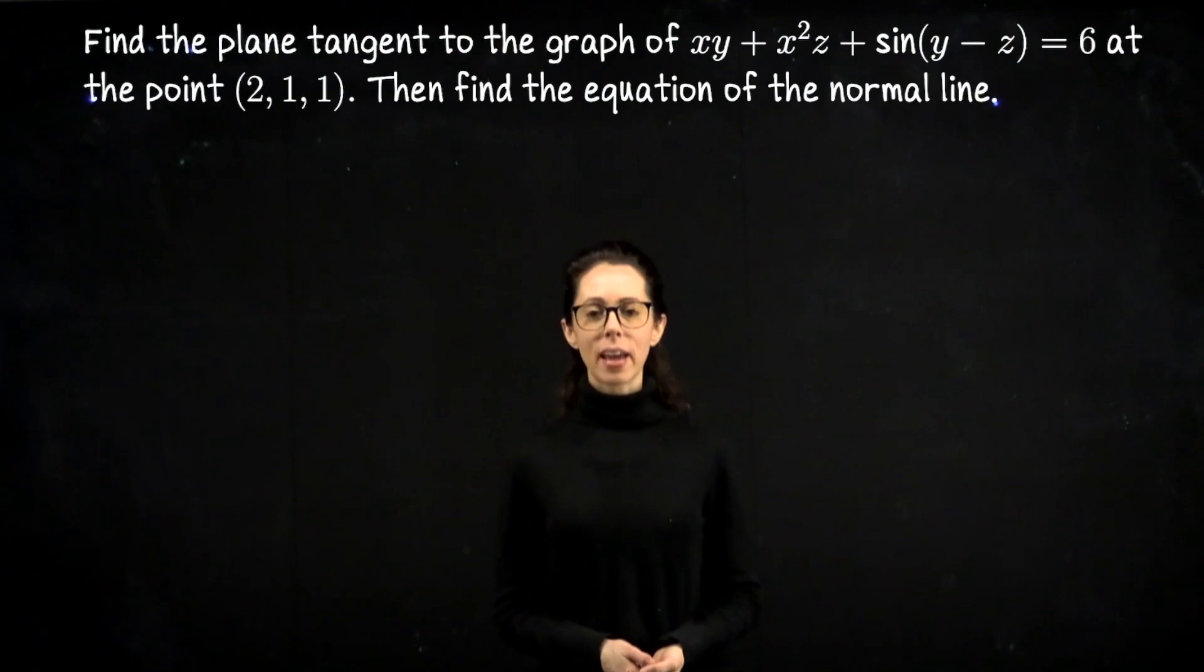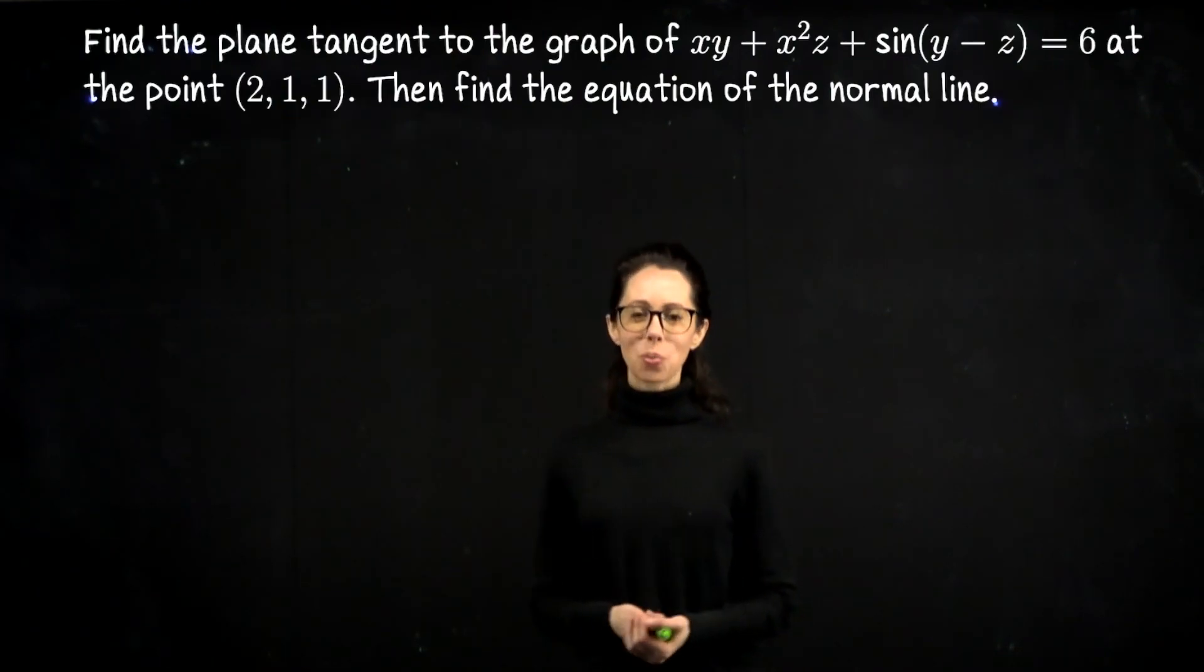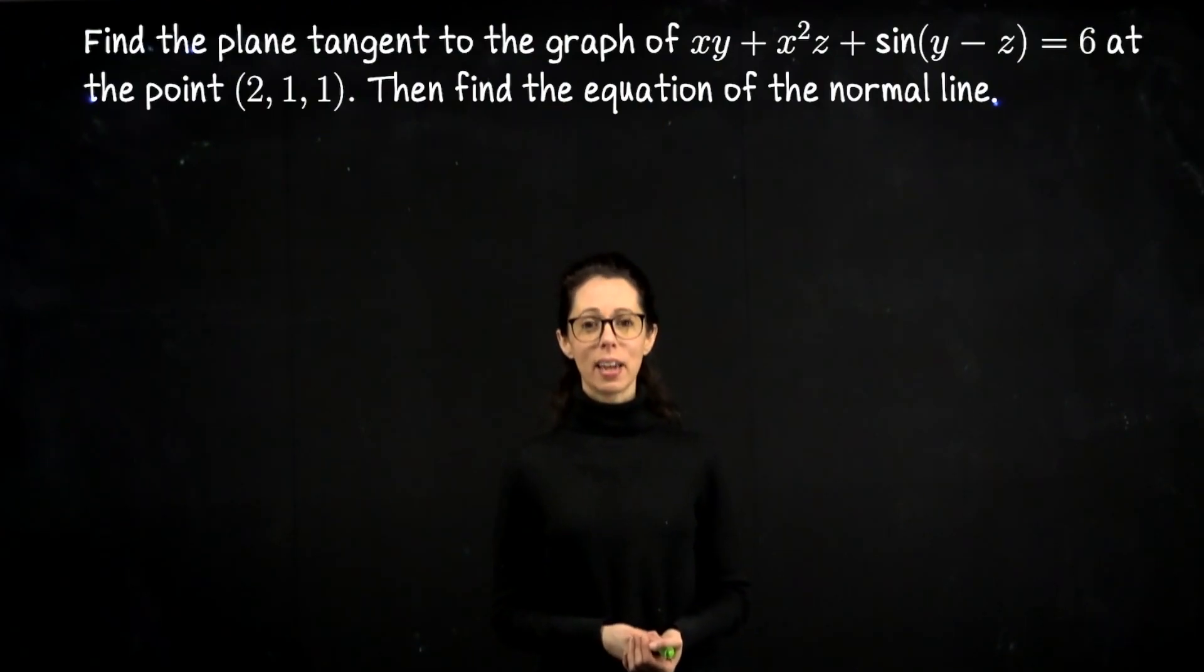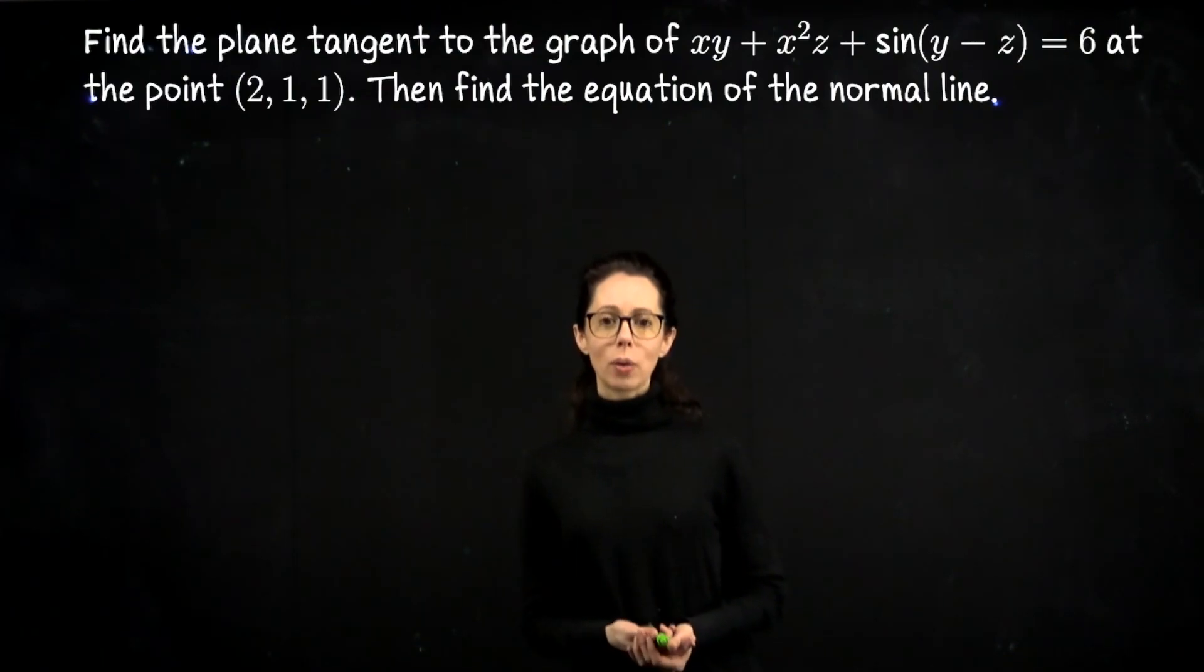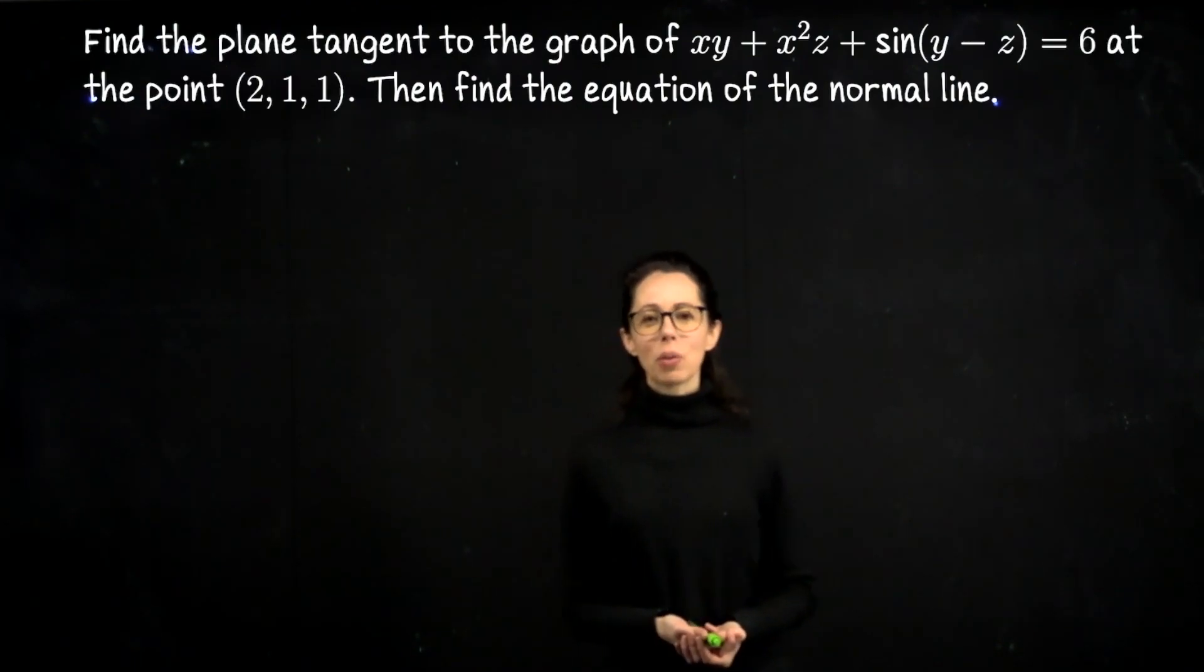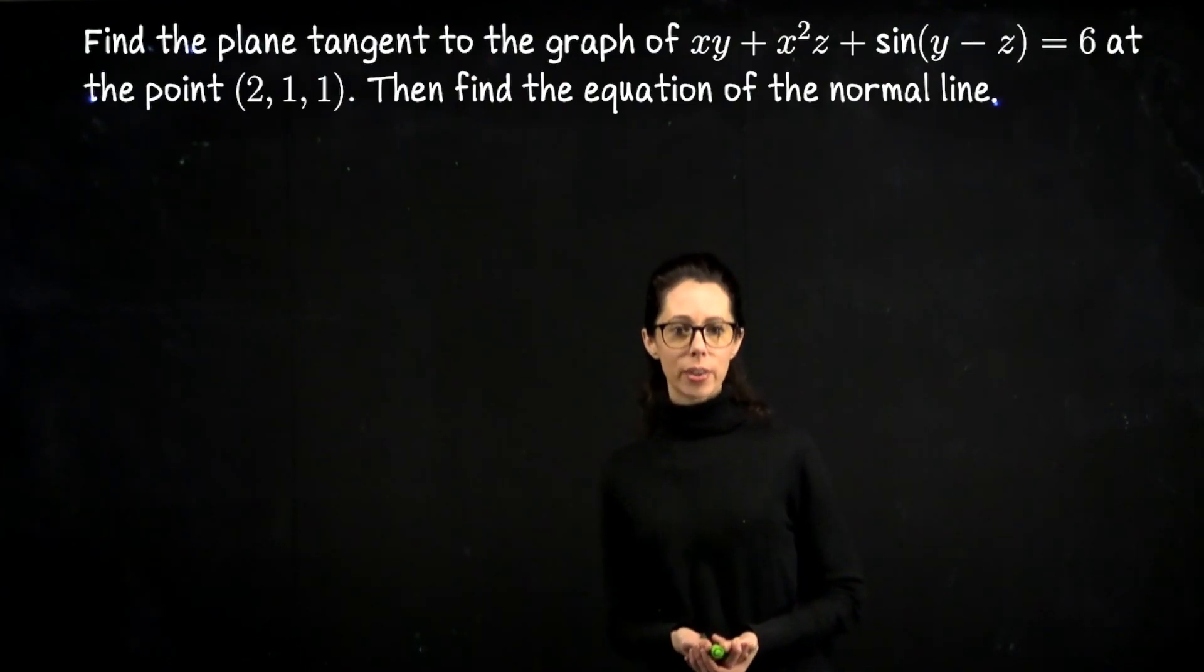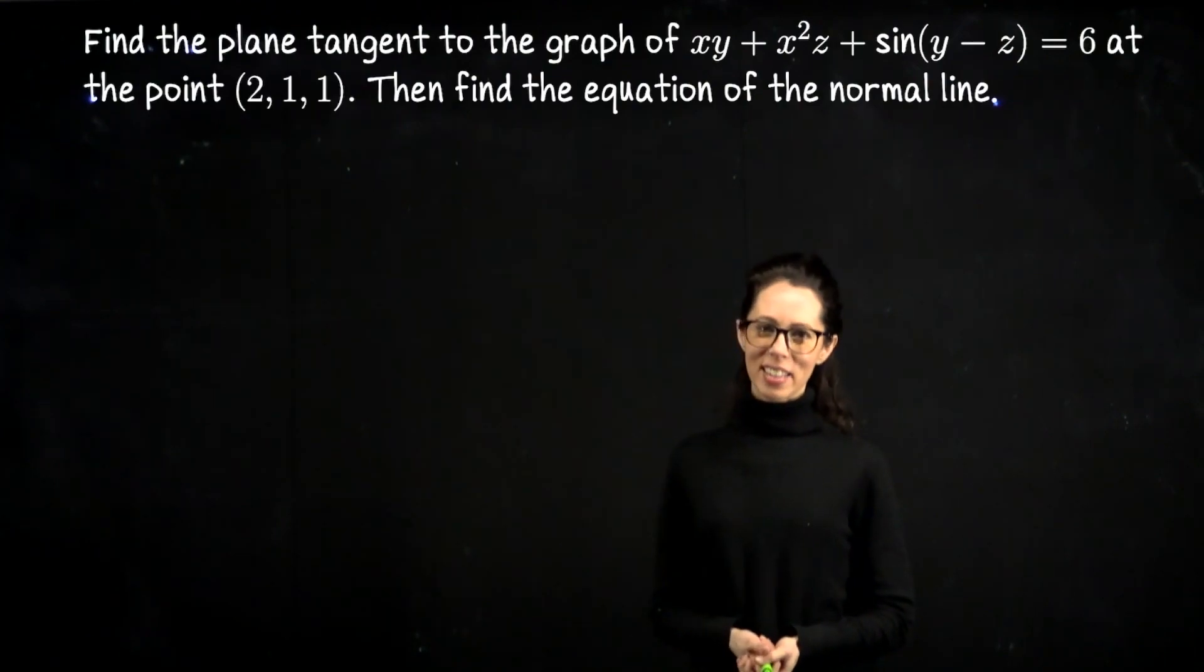In this exercise, we are going to find the equation of the plane tangent to the graph of xy + x²z + sin(y - z) = 6 at the point (2,1,1), which lives on the graph of this equation. Then we will write down the equation of the line which is perpendicular to that plane through that point, often called the normal line.